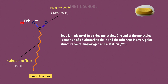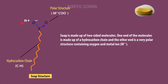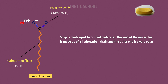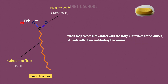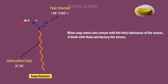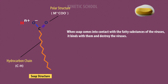Soap is made up of two-sided molecules. One end of the molecule is made up of a hydrocarbon chain, and the other end is a very polar structure containing oxygen and a metal ion. When soap comes into contact with the fatty substances of viruses, it binds with them and destroys the viruses.